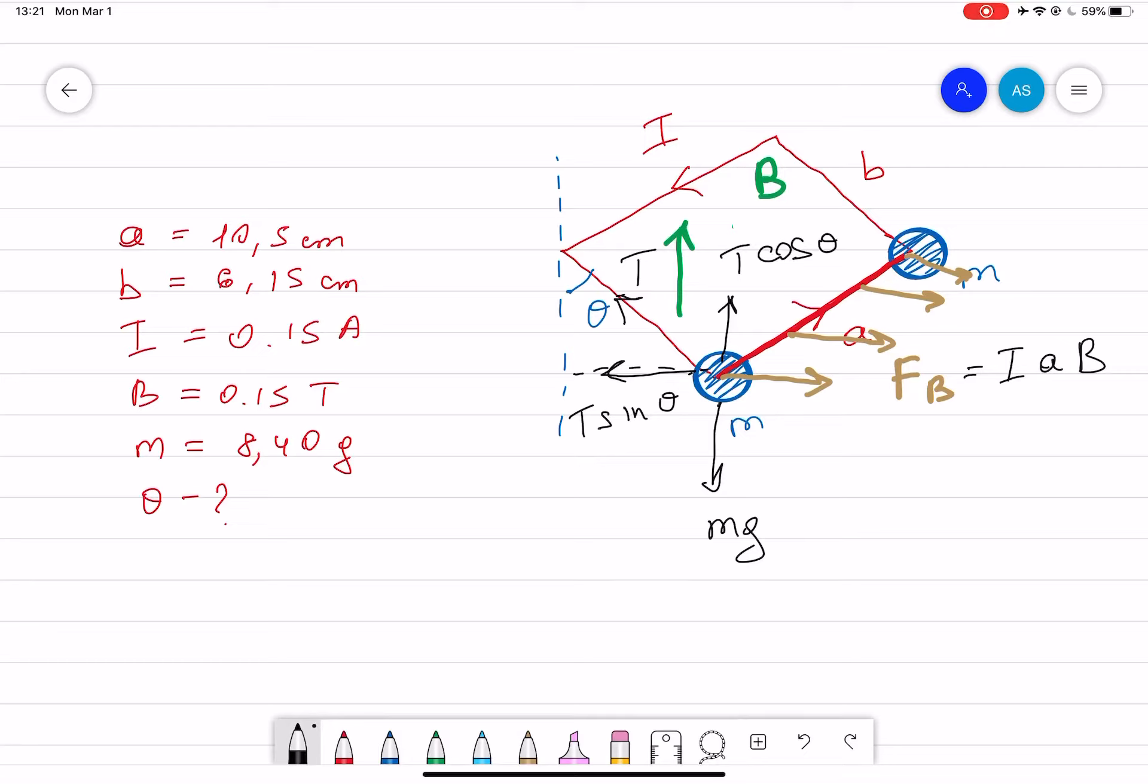If it's in equilibrium then we know that sum of the forces is equal to zero. If that's the case then we can say that T sine theta is equal to the FB which is equal to the current IAB, then T cosine is equal to 2mg.